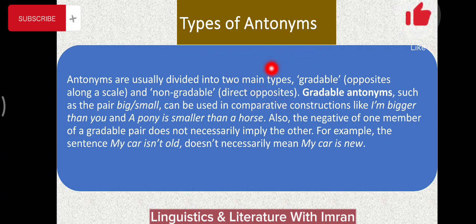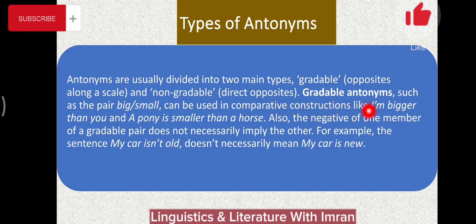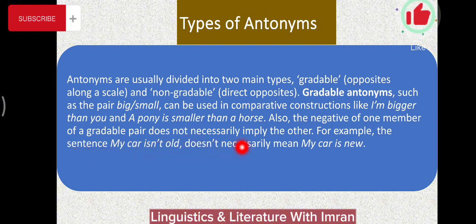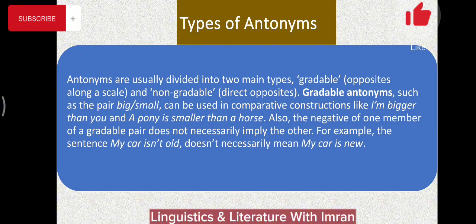Antonyms are usually divided into two main types: gradable opposites (along a scale) and non-gradable direct opposites. Gradable antonyms such as 'big' and 'small' can be used in comparative constructions like 'I am bigger than you' or 'a pony is smaller than a horse'. Also, the negative of one member of a gradable pair does not necessarily imply the other — for example, 'my car isn't old' doesn't necessarily mean 'my car is new'.